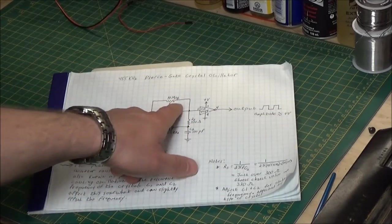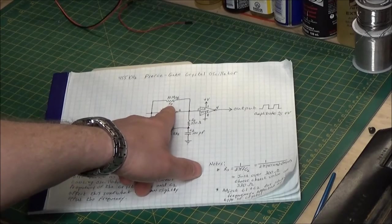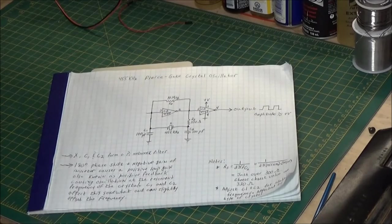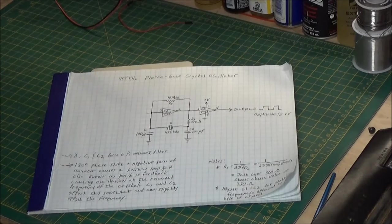We're taking 1 over 2π times 455 kilohertz times 100 picofarads. When you calculate out all the zeros, it's going to be just a little over 300 ohms. It comes out around 308 ohms or so. I used the closest resistor I had, which is 330 ohms. This resistor up here is a feedback resistor. I set it to 10 megaohms. It's not really highly critical.